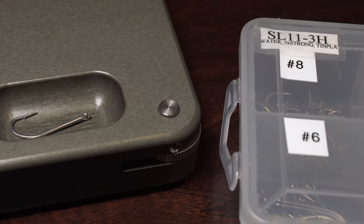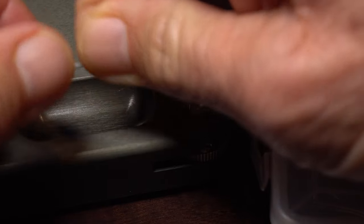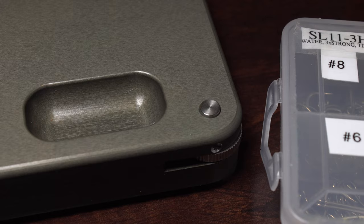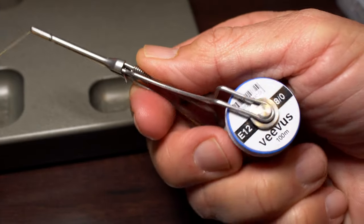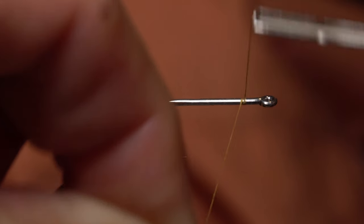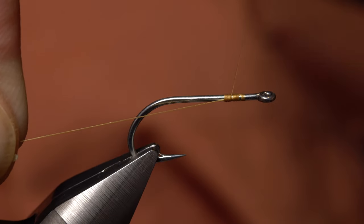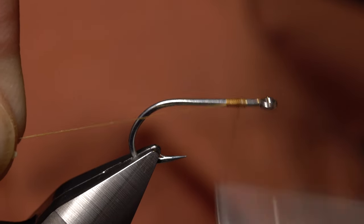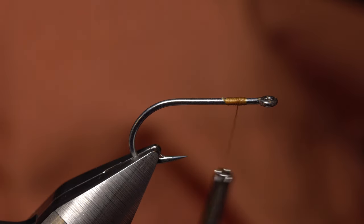Peter starts by getting a Gamakatsu SL11 3H size 6 hook firmly secured in the jaws of his tying vise. For thread, he's loaded a bobbin with a spool of Tan Vivas 8-0. Start the thread on the hook shank, leaving an eye-length space behind the eye, and build up a short base that will become the landing pad for the fly's bead chain eyes. You can then snip the tag end of the thread off close.